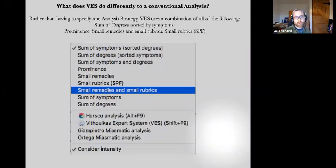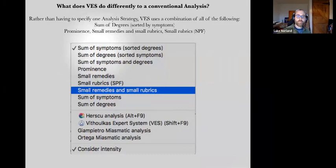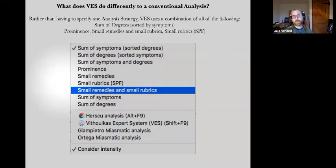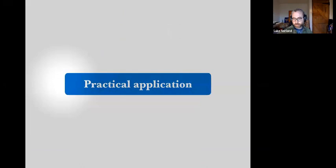What does the VES actually do? It combines the different analysis strategies available in Radar Opus. Your standard one adds up all the symptoms and degrees and sorts remedies by that. Then you have simpler versions, prominence based on grading or intensity, small remedies, small rubrics. It combines all of those strategies into one and makes a blend that hopefully gives you more intelligent results.